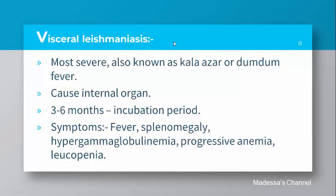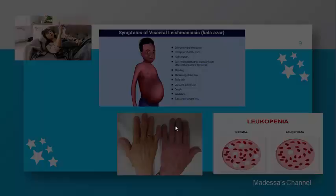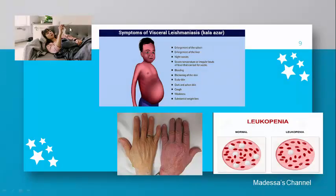Visceral leishmaniasis is the most severe type, also known as kala-azar or dum-dum fever. It affects the internal reticuloendothelial organs. Its incubation period is about three to six months, and may be longer up to one year. Symptoms include fever, splenomegaly (enlargement of the spleen), hypergammaglobulinemia (increased immunoglobulin in blood serum), progressive anemia, and leukopenia (deficiency of white blood cells).